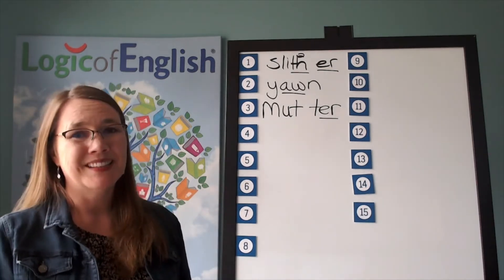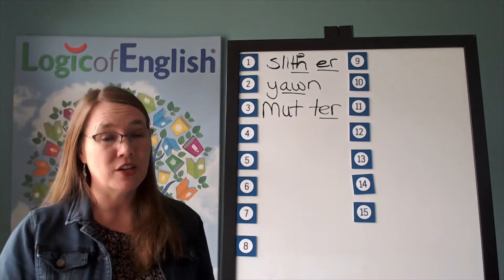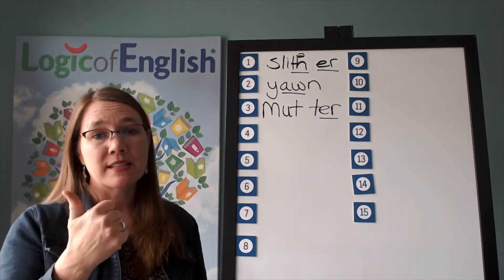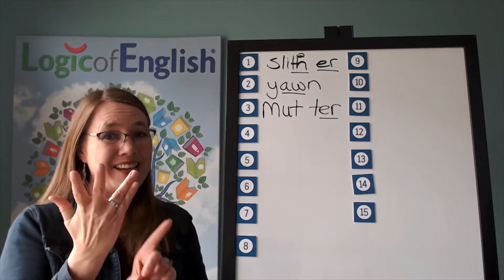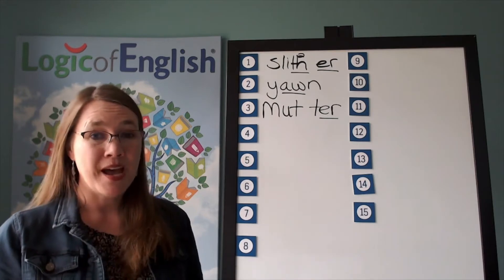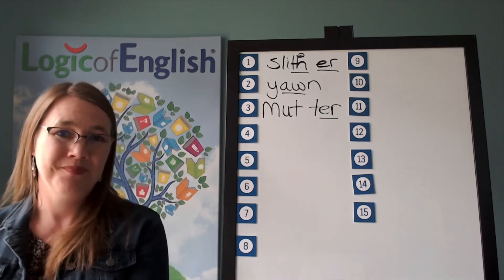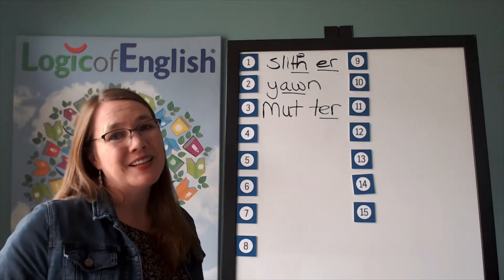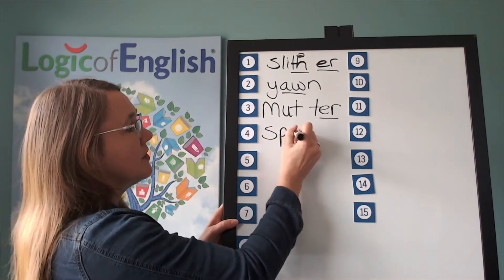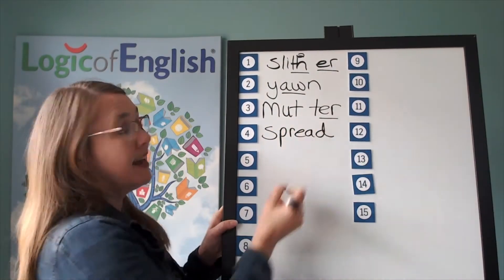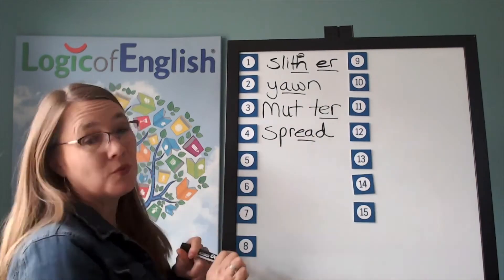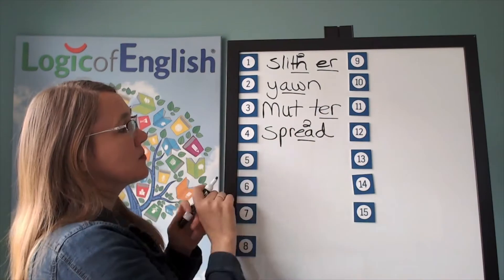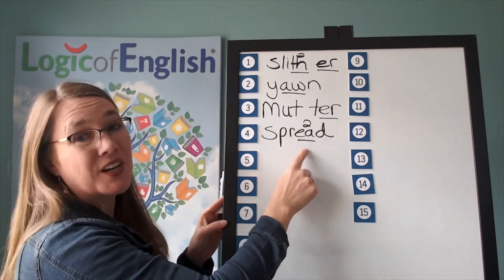The next word is spread. I will spread the jam on my toast. Spread. Go ahead and say spread. Let's sound it out: s-p-r-e — use an ea — d. Go ahead and write spread. Help me to write it: s-p-r-e-d. We'll underline the e. What sound of ea do we hear in spread? Let's write the second sound. Let's read it: s-p-r-e-d — spread.